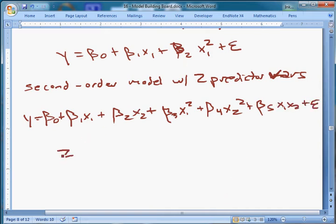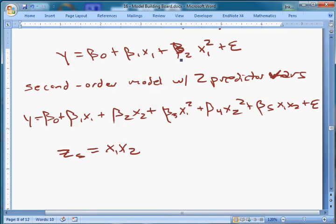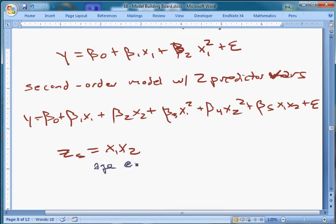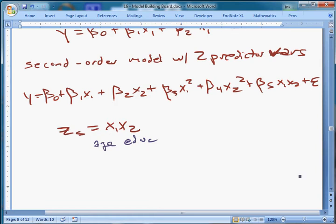We can add additional variables. We have a second-order model with two predictor variables. This is y equals beta0 plus beta1x1 plus beta2x2 plus beta3x1 squared plus beta4x2 squared plus beta5x1x2 plus epsilon. Now in this model, z5 is equal to x1, x2, and it accounts for potential effects of the two variables acting together.